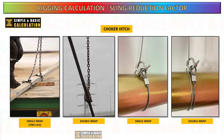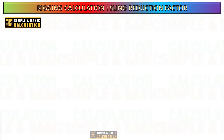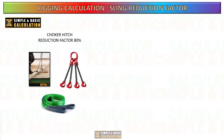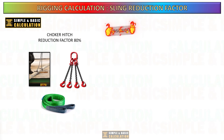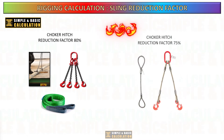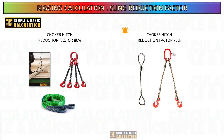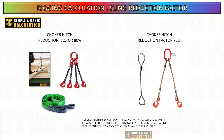Here are example images showing the use of a choker hitch with both a chain sling and a wire sling. When utilizing a chain sling or webbing sling for a choker hitch, the reduction ratio is 20 percent of its capacity. However, for a wire sling, the reduction factor is 25 percent. The rated load for an angle of choker less than 120 degrees shall be determined by the sling manufacturer.